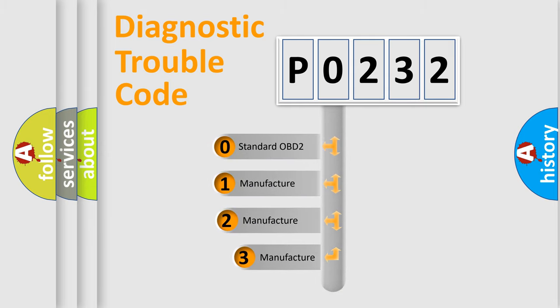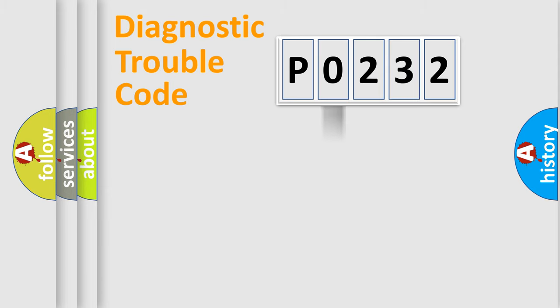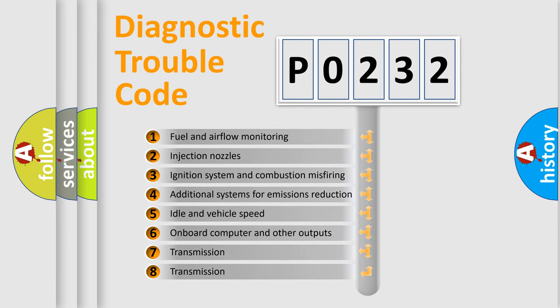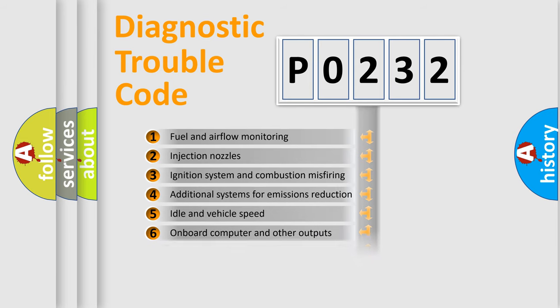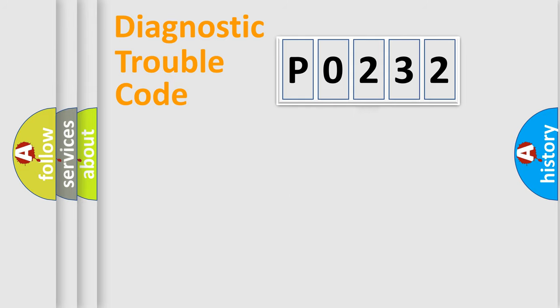If the second character is expressed as zero, it is a standardized error. In the case of numbers 1, 2, or 3, it is a manufacturer-specific error expression. The third character specifies a subset of errors. The distribution shown is valid only for the standardized DTC code.